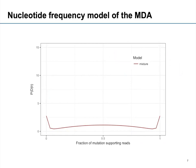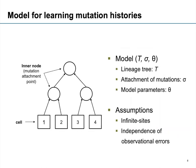Now that I've told you how we model the nucleotides, I'd like to say how we actually integrate that into our phylogenetic structure. We have a tree with cells as leaves — a cell lineage tree — and inner nodes where we can place mutations. Our model consists of a tree, an attachment of mutations to these inner nodes, and the model parameters of our beta-binomials. We also make some strong assumptions: we assume the infinite sites assumption, meaning that once you've gained a mutation you won't lose it, and a single mutation won't happen twice independently.